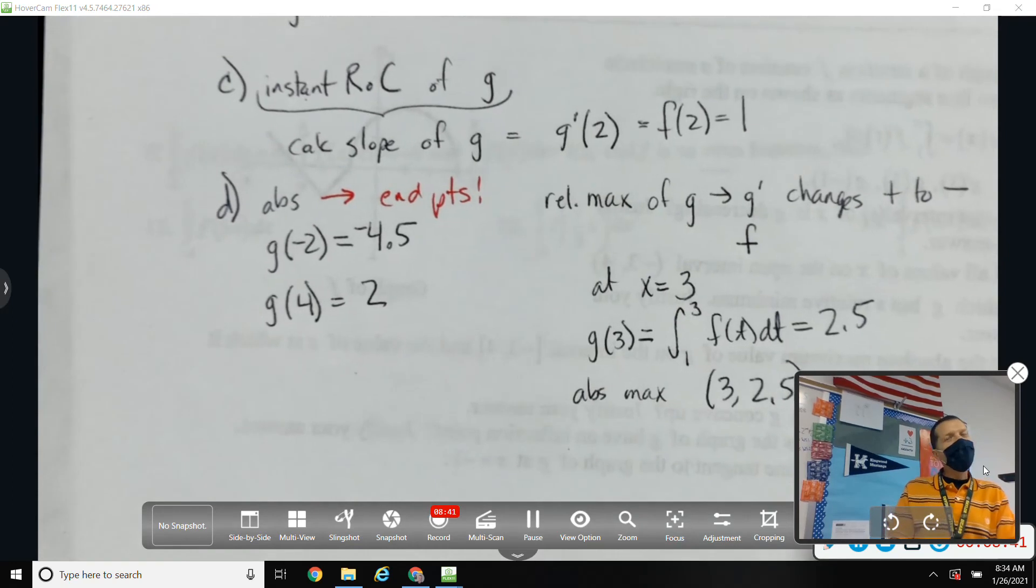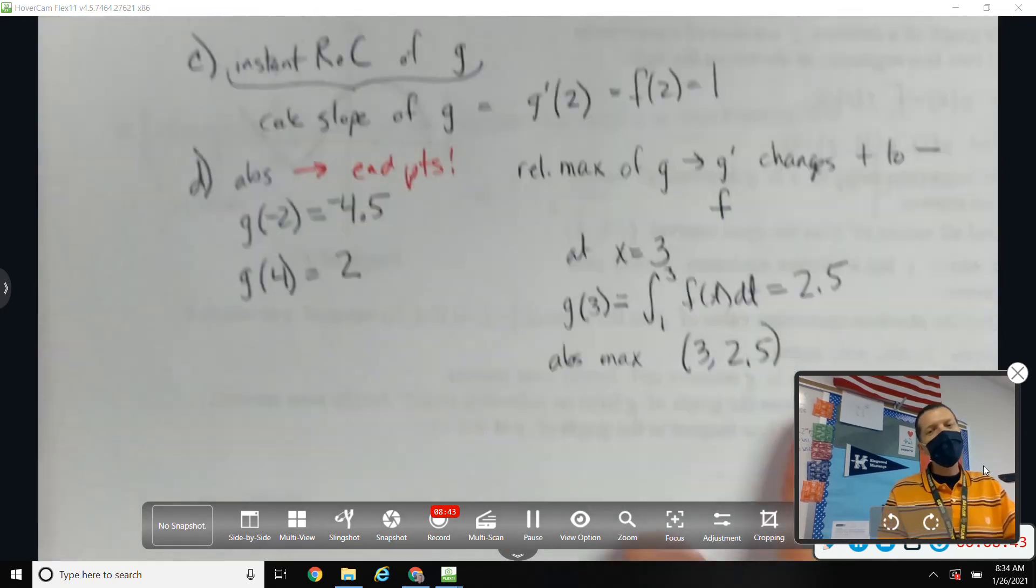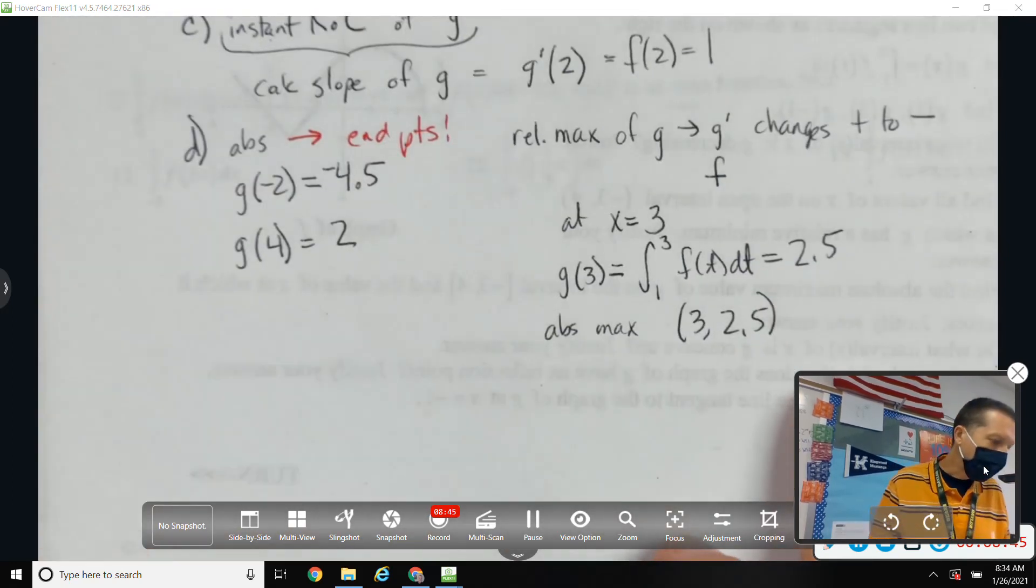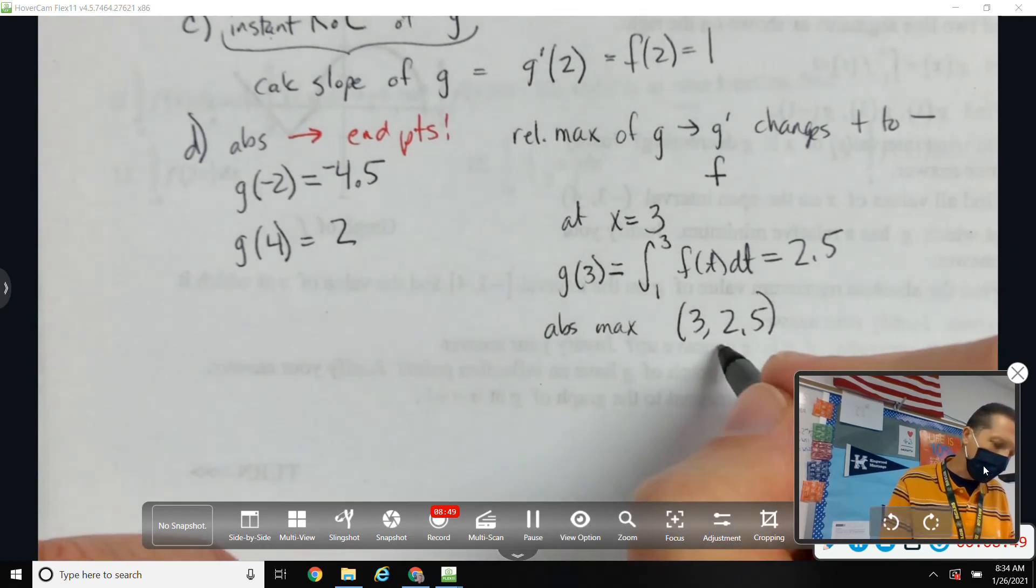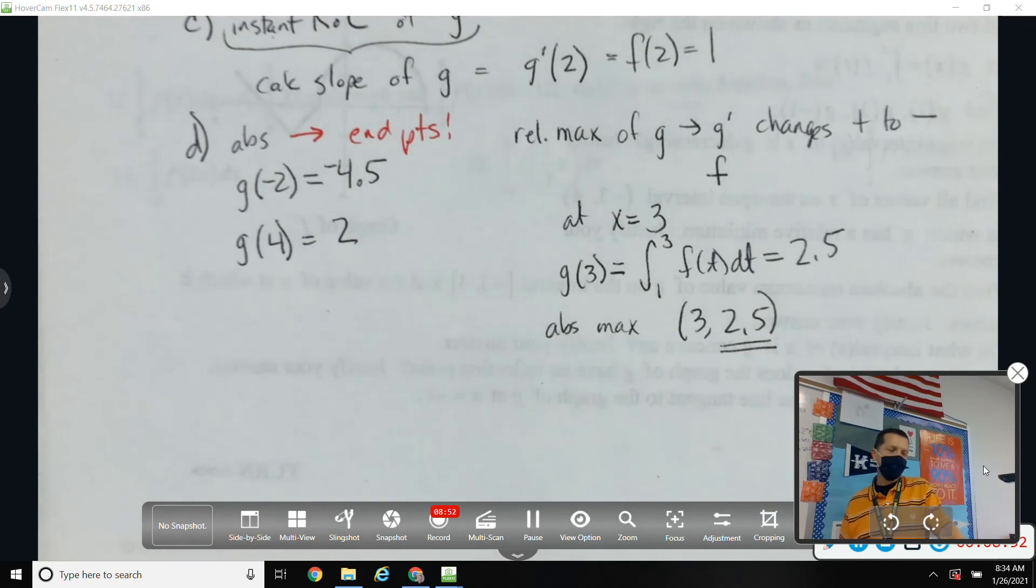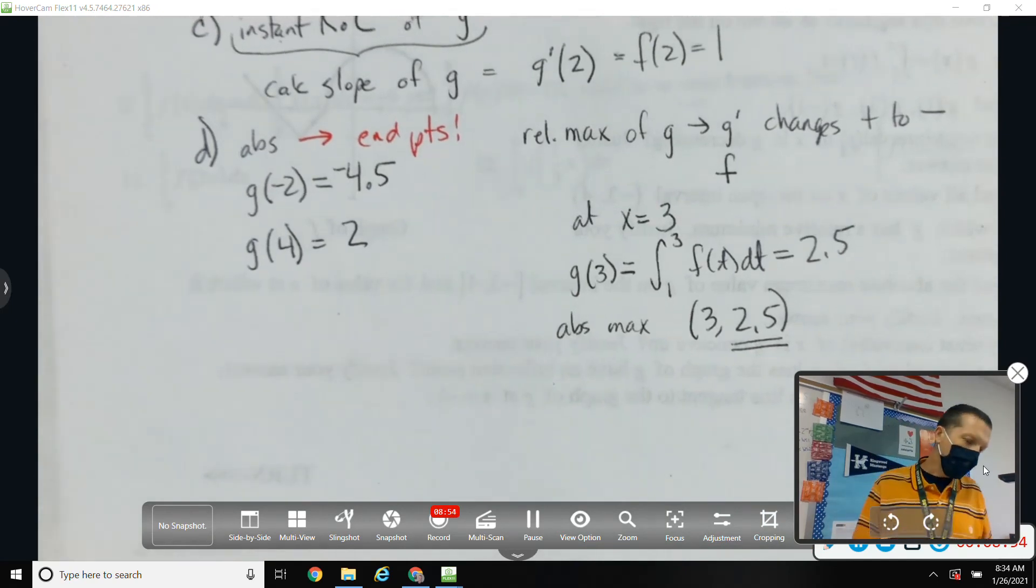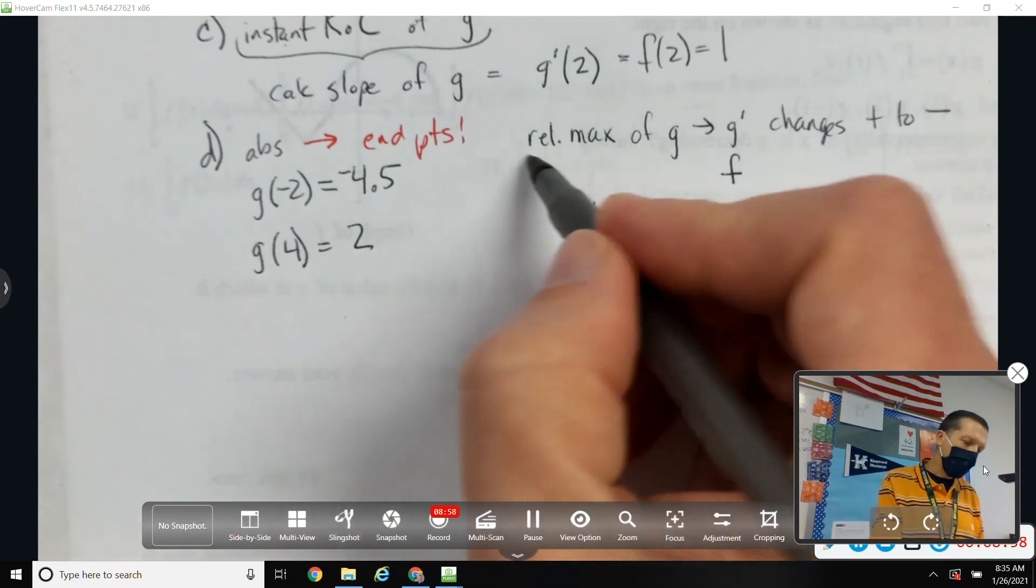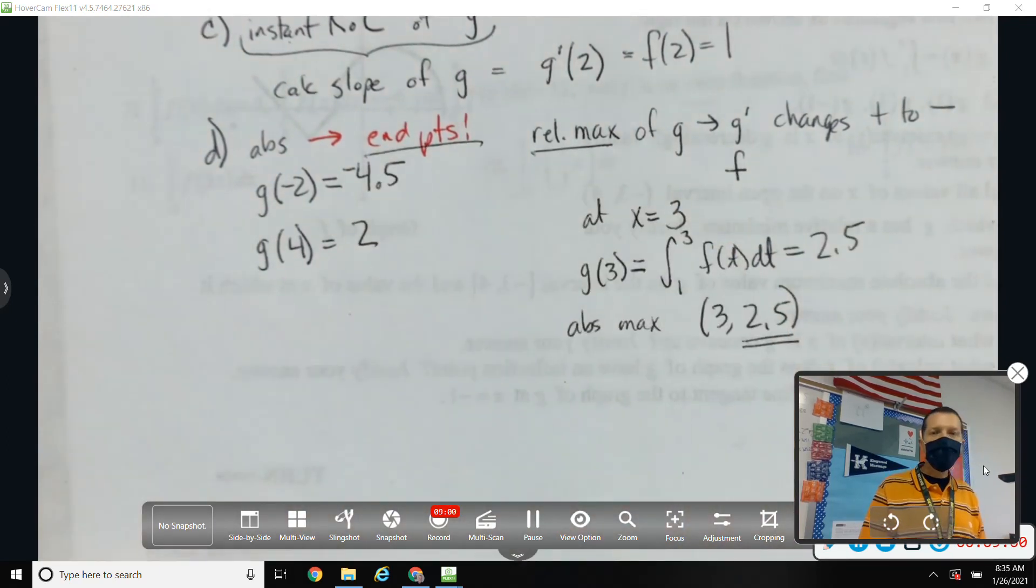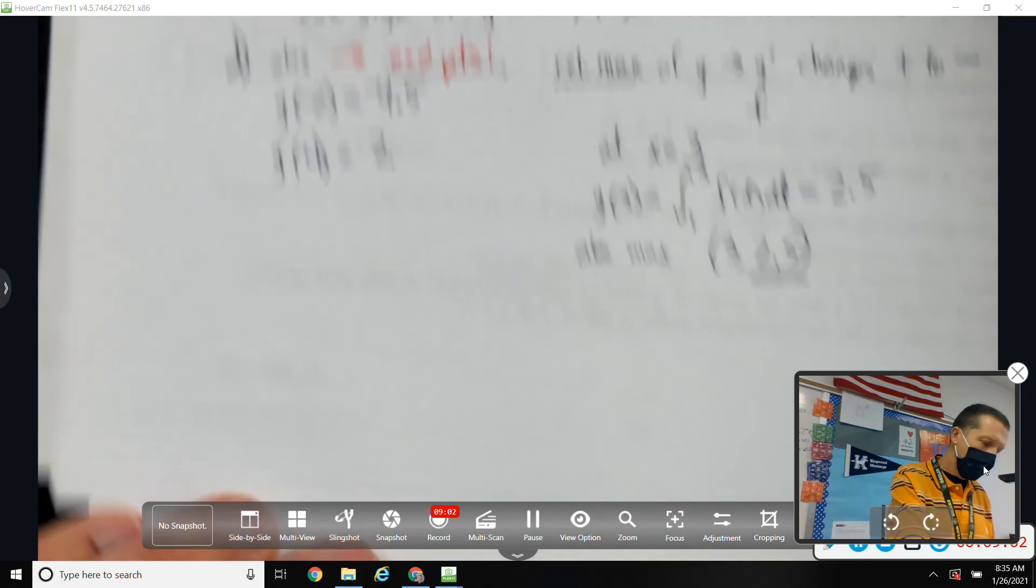So the absolute max is at 3 comma 2 and a half. Remember, you're almost always safe if you answer with an ordered pair. Let's be careful. Find the absolute maximum of G. So the actual absolute maximum would be 2.5. Where it happens is 3. Justify your answer. Well, this is the justifying. We showed all our work. We found a relative max. We checked the endpoints.